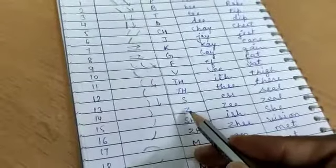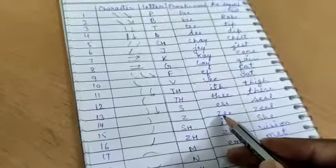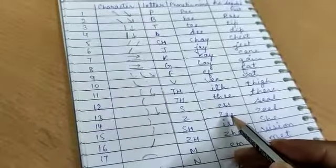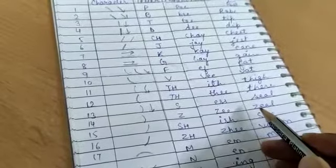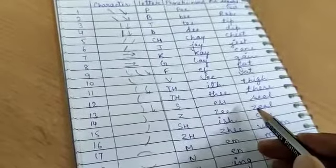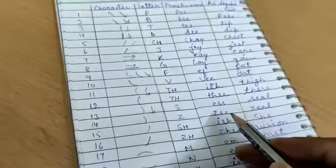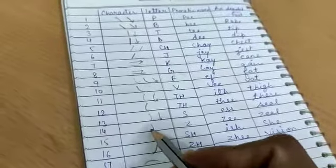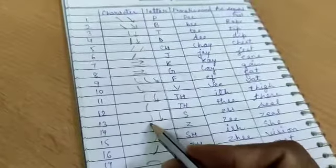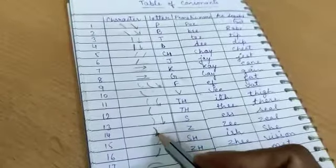And next, we have Z. We can see its phonetic name Z. As we can hear in word, ZEAL. Not SEAL. ZEAL. So, this ZE sound is represented by this stroke. This is heavier than S.